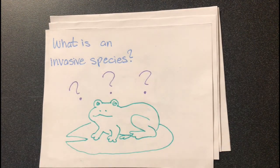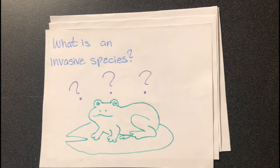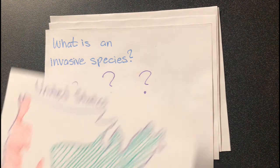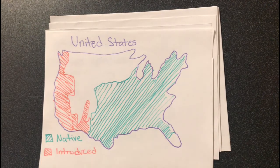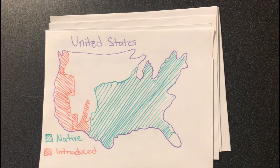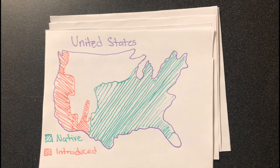To be considered invasive, a species has to be moved from their normal home to somewhere new, and this is almost always due to human activity. Once introduced, the presence of an invasive species will cause harm to its native environment around it. This can easily be seen in the bullfrog.